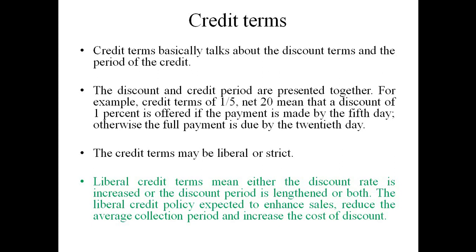Credit terms may be liberal or strict. Liberal credit terms mean either the discount rate is increased, or the discount period is lengthened, or both. For example, if currently 1% discount is offered for 5 days, liberal terms would mean 2% or 3% discount for the same 5 days, or extending the discount window to 10 or 15 days. Either increasing the discount rate or increasing the discount period makes the credit terms liberal.